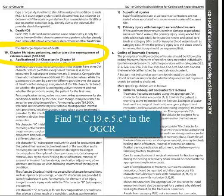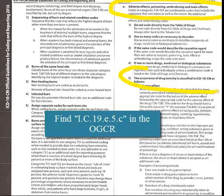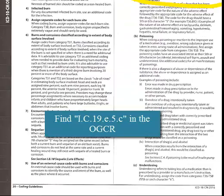And now we're looking for 19E, which is Adverse Effects, Poisoning, Underdosing, and Toxic Effects. Under E, we see number 5, which is the Occurrence of Drug Toxicity, classified in ICD-10-CM as follows. And then letter C is Underdosing.